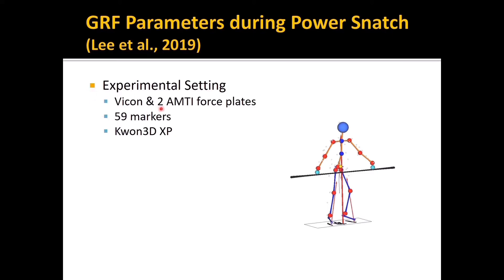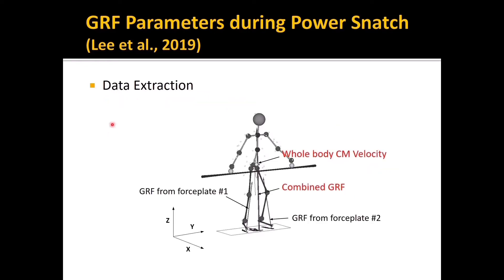For experimental setting, the Vicon system and two force plates were used for collecting motion and ground reaction force respectively. A total of 59 markers were attached throughout the participants' body. Quant3DXP and motion analysis software were used for the data analysis. This study used combined GRF, which is the summation of the two ground reaction forces, and also used the whole body center of mass velocity.